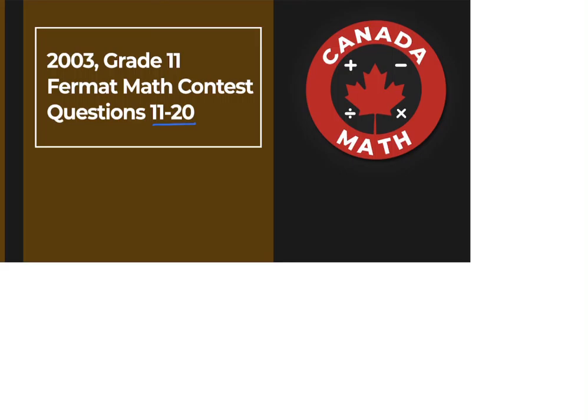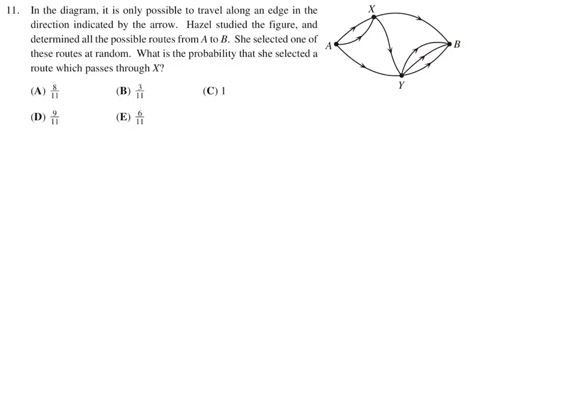Questions 11 through 20 on the 2003 grade 11 Fermat Math Contest. In the diagram, it is only possible to travel along an edge in the direction indicated by the arrow. Hazel studied the figure and determined all the possible routes from A to B. She selected one of these routes at random. What is the probability that she selected a route which passes through X?